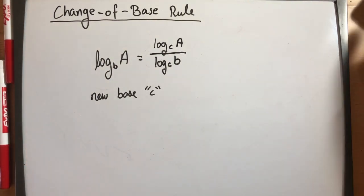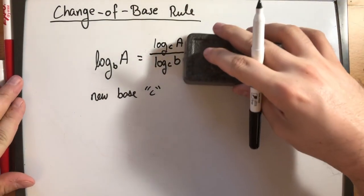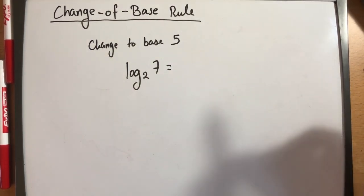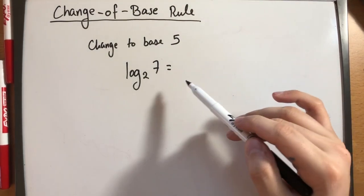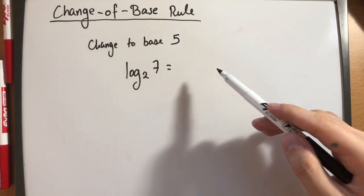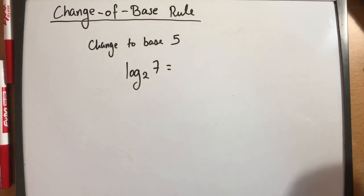So let's do some practice problems here. Let's say that I have this logarithm of base 2 and I want to change it to base 5 instead, meaning not literally changing this to base 5 but meaning I want to work with this problem but only in base 5.